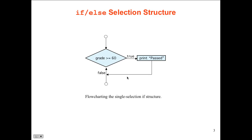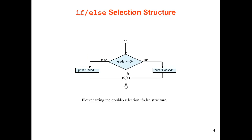In the old days, people used to write flowcharts when designing source code because it helped you design the ifs, elses, and flow control. Then we got more elaborate control structures like case, switch, and loops — it got more difficult to program those things with a flowchart. Flowcharting is not really as popular as it used to be because things are more complicated. Here's a flowchart of a double selection with an if-else: false prints 'failed', true prints 'passed' and comes back into another selection.